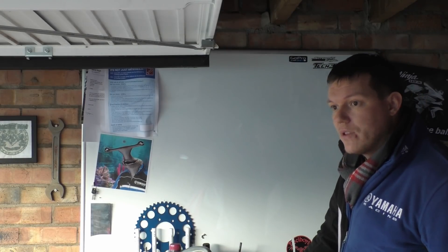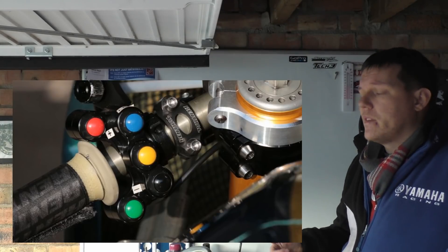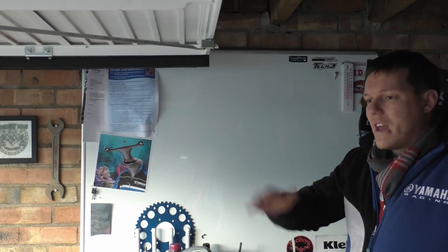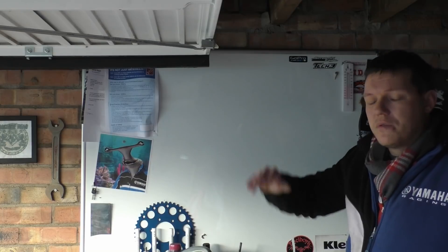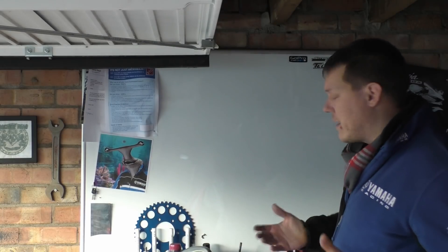On MotoGP bikes they have loads of controls - power controls, fuel map controls. Basically it's a button and generally they have like A, B, and C, or one, two, three, depending on how the manufacturer wants to do it. But the question was how come they have engine braking controls and how do they control that?